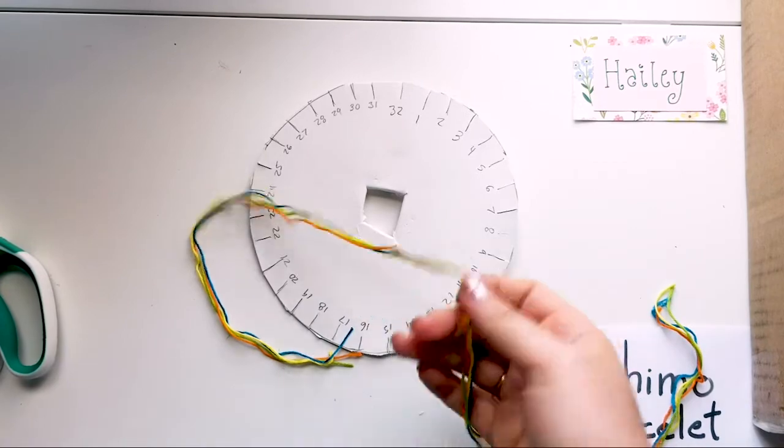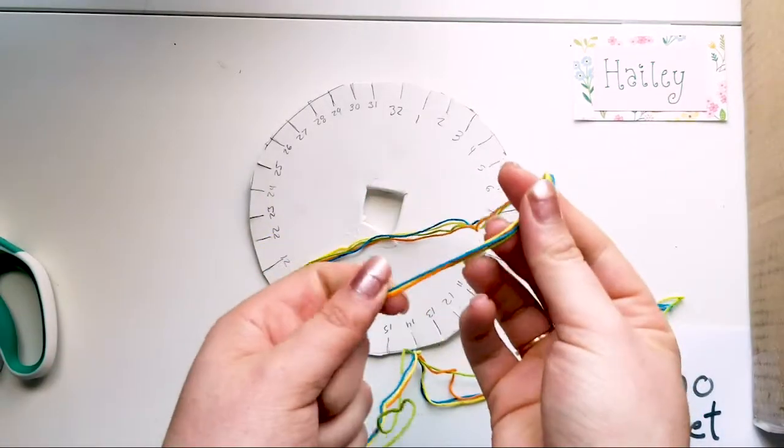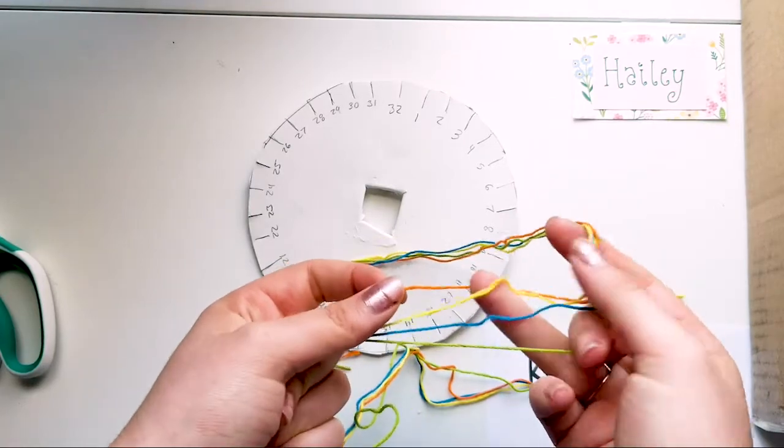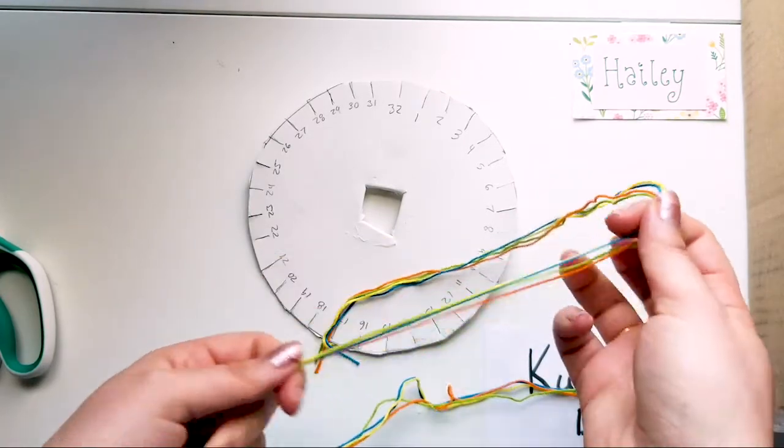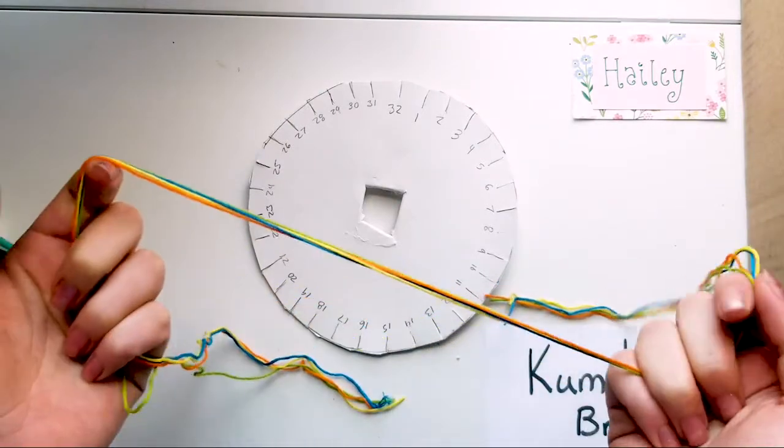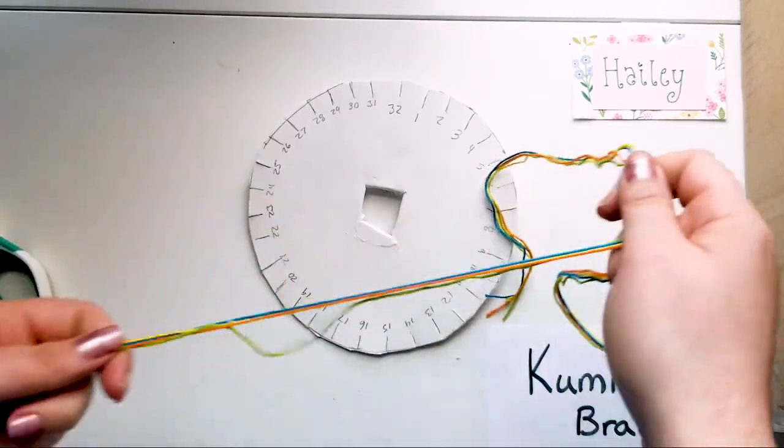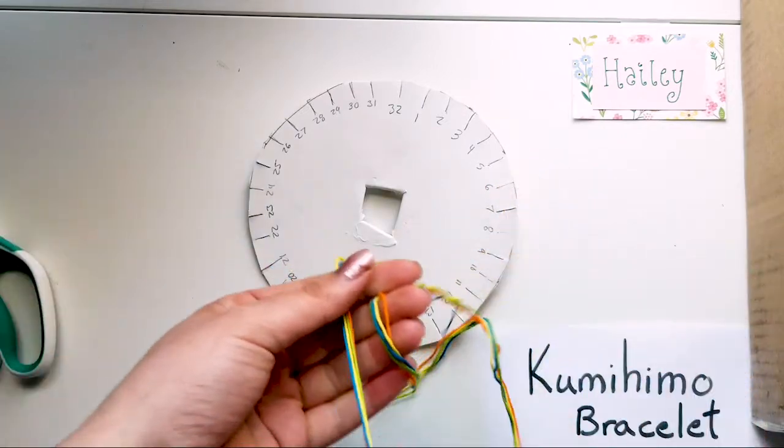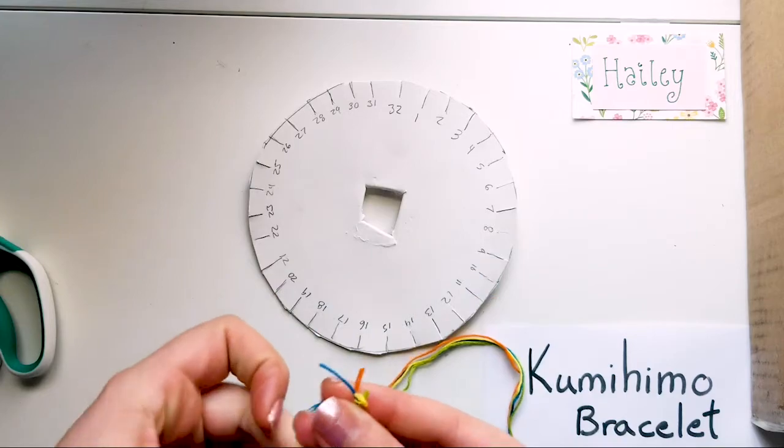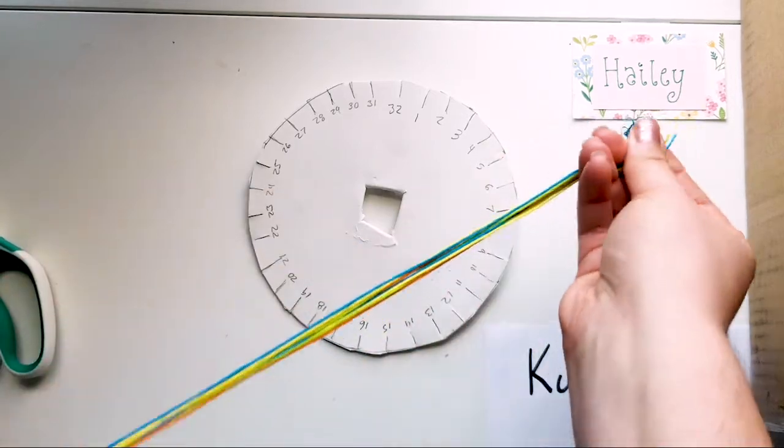So I just finished cutting my four pieces of string. Hopefully the colors are different enough that you can tell which one I'm going where. If you're curious, this is just under three feet, and it makes a bracelet that's about six inches long. So keep that in mind if you're knowing what you want to use the bracelet for. You can measure your wrist or your ankle and backtrack.